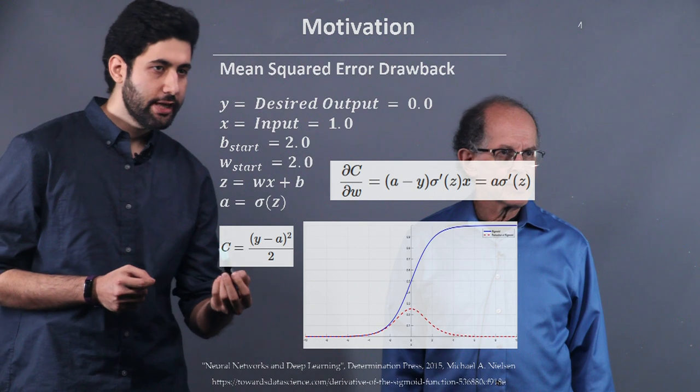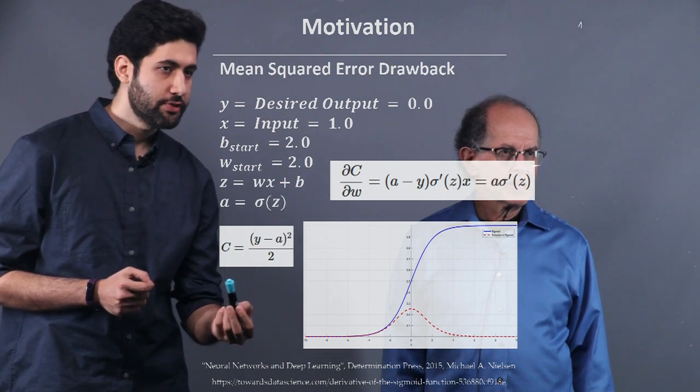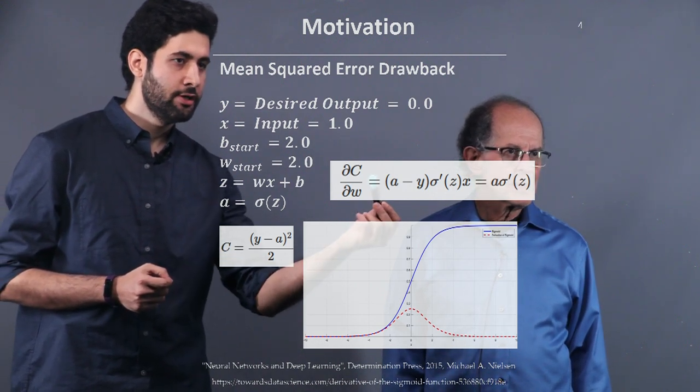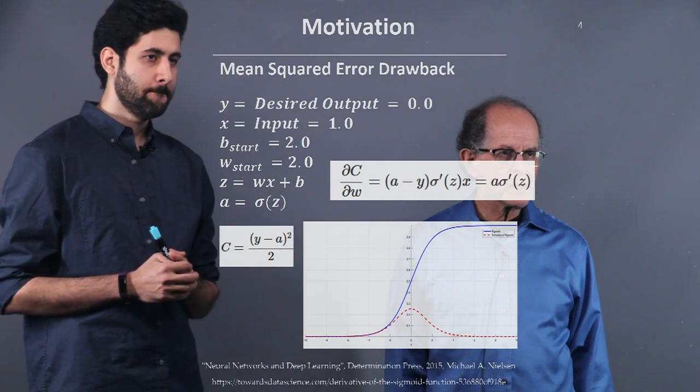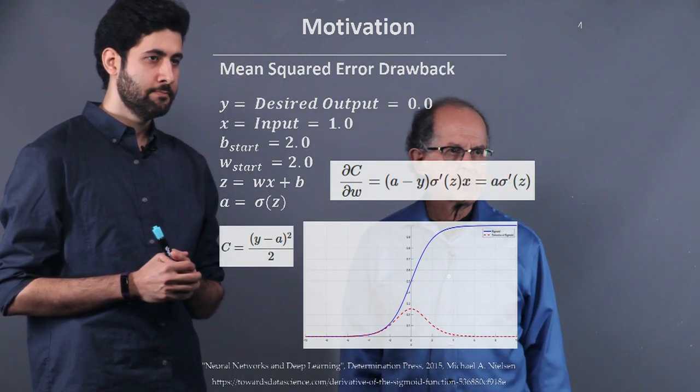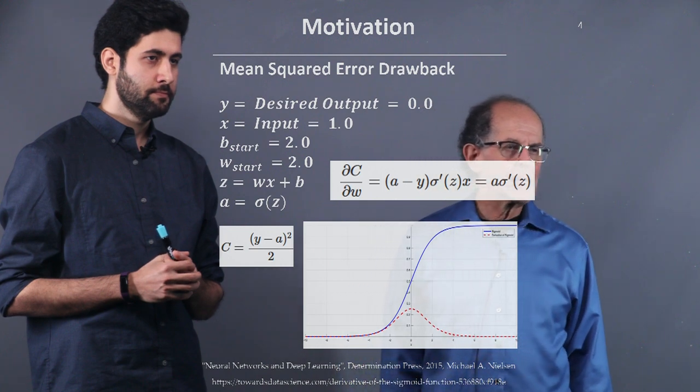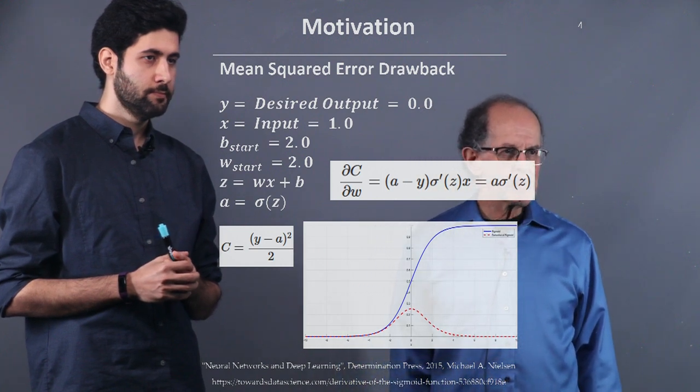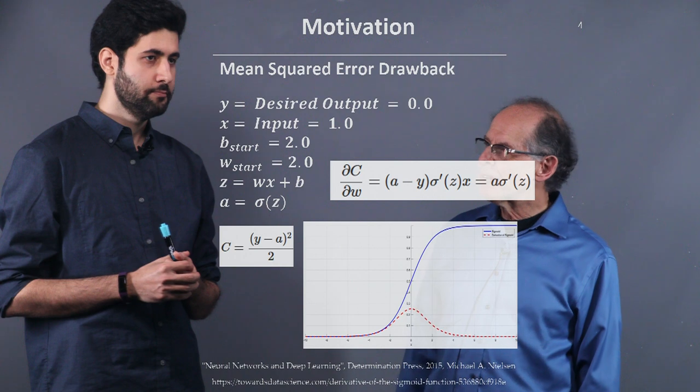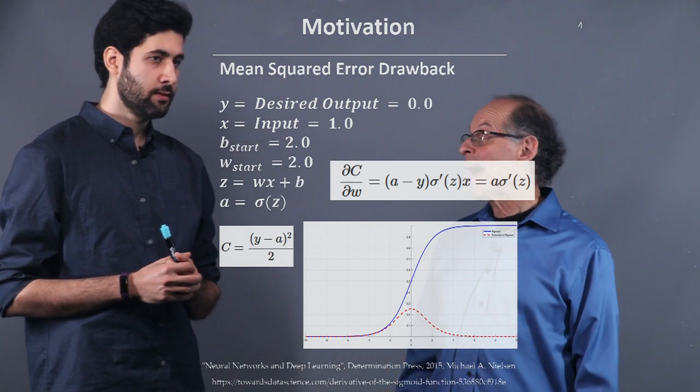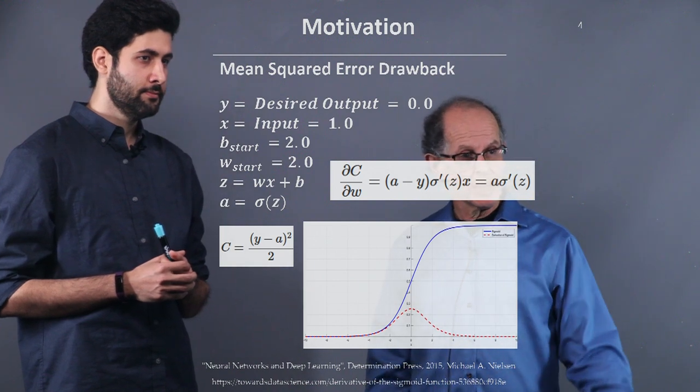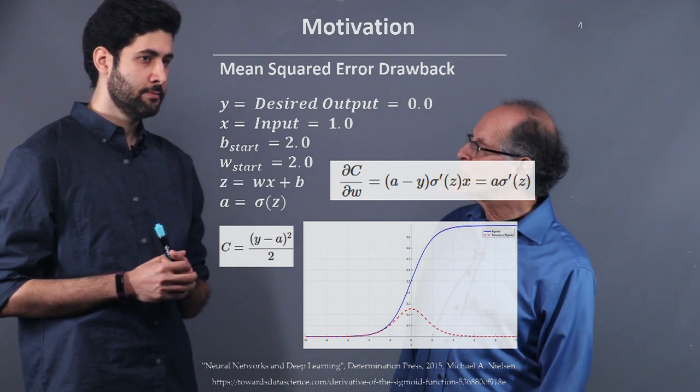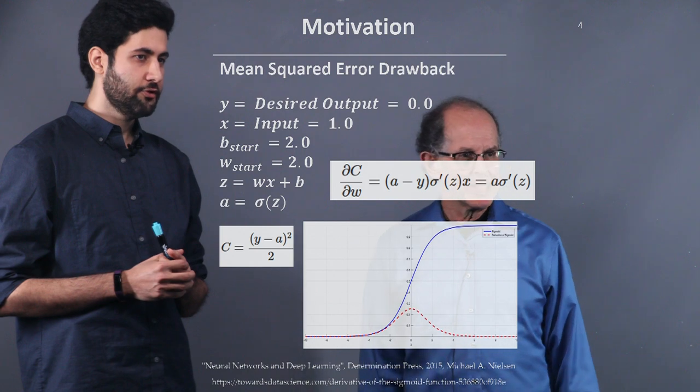Right. And if we take the gradient of c with respect to w, here, this is the function. That's the result. So, we have the sigma prime. We didn't have it before. And sigma prime. So, sigma is a function that has basically two asymptotes. Right. So, when we're stuck on the asymptotes, the red curve, I guess, must be the derivative curve. Correct.